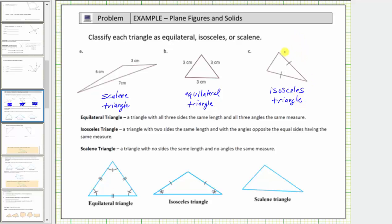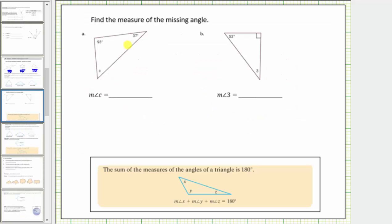Because this is an isosceles triangle, we also know the interior angles opposite these two sides have the same measure. Now for the next question, we're asked to find the measure of the missing angles. Remember that the sum of the interior angles of any triangle is equal to 180 degrees.